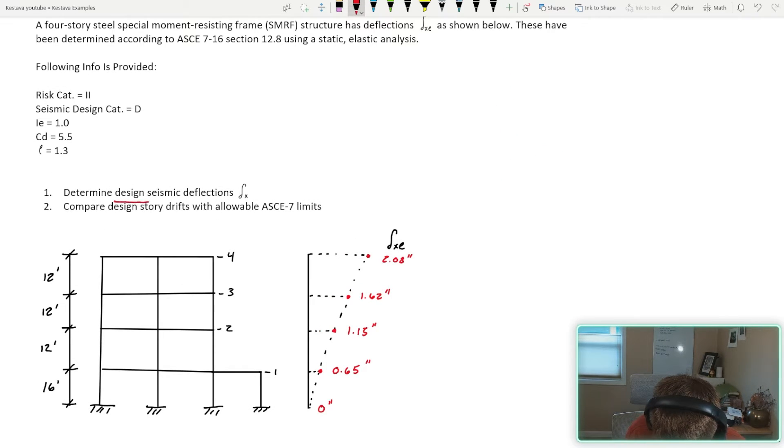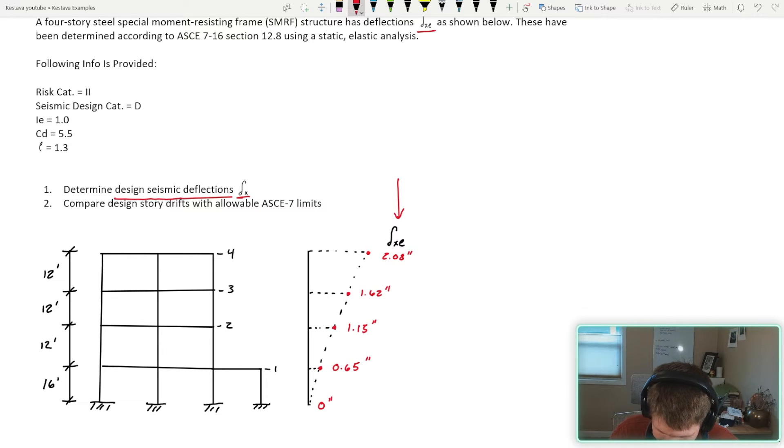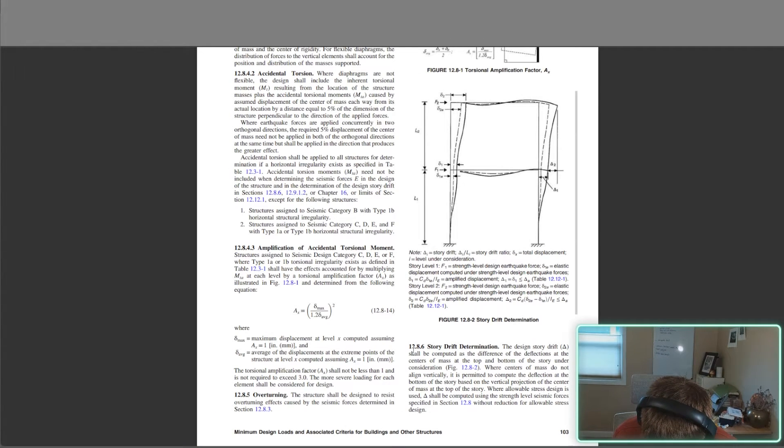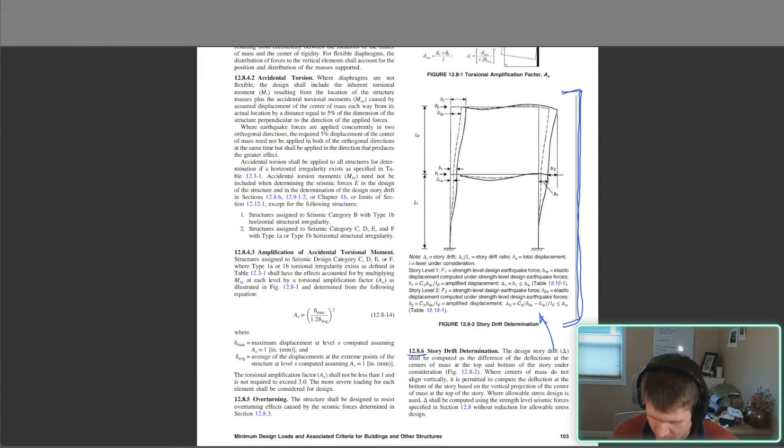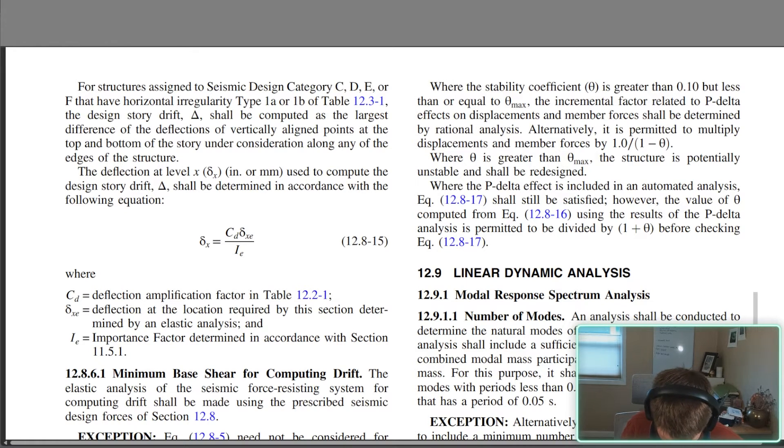So for us here today, we have our design seismic deflections denoted as delta sub X. I'm going to call it Lambda sub X. Well, we have been given elastic deflections. So first off for part one, we need to switch them into design deflections. Well, how do we do that? Let's jump over to the ASCE 7-16. You'll find yourself in section 12.8.6. A figure that's actually very useful over time is this one right here, as well as the literature below it. You should be able to decipher all of this once we're done with today's video, but we're going to move to the next page and that's going to land us here. So the deflection at level X, there's our symbol, our Lambda sub X used to compute design story drift, shall be determined in accordance with the following equations.